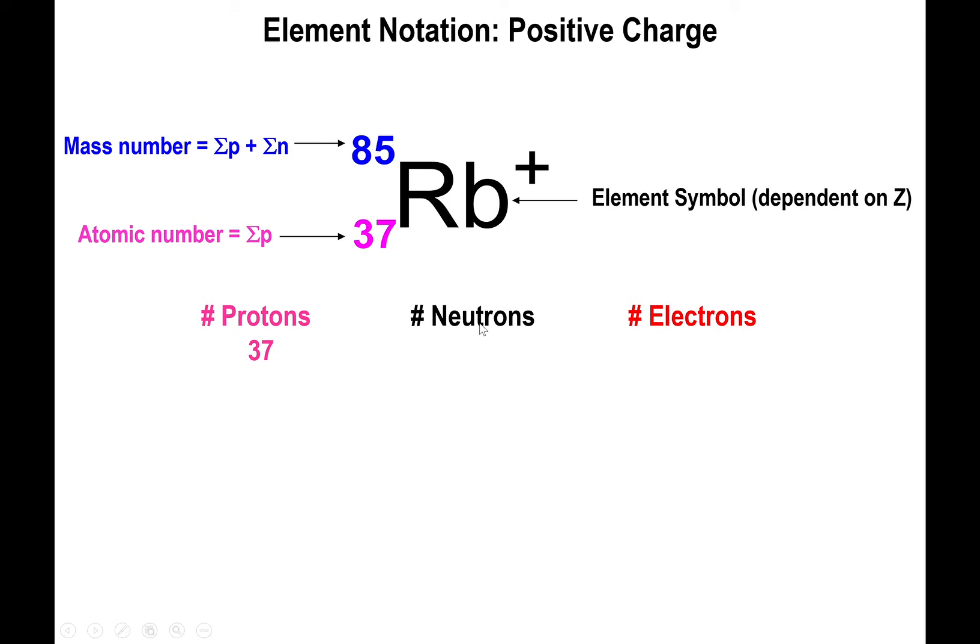The number of neutrons, once more, is the atomic mass minus the atomic number. So we have 85 minus 37, which is equal to 48. So we have 48 neutrons. And now for the electrons, notice that now we have a charge written for the element. The way we determine the number of electrons is simply by subtracting the charge of the element from the atomic number. So in other words, 37 minus +1 is equal to 36 electrons.